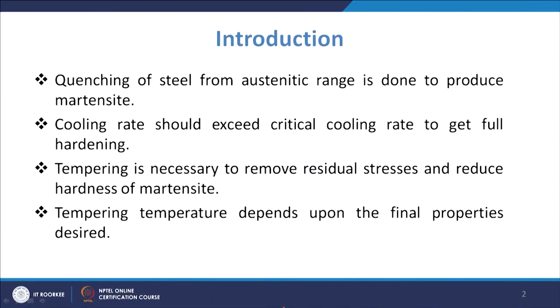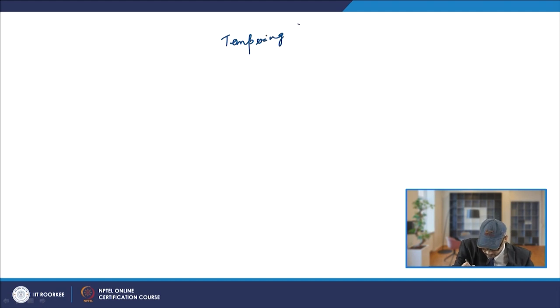Because of the extremely high level of stresses from martensite formation, we need to temper in order to reduce this extreme hardness and induce certain toughness. We use the process known as tempering, which is necessary to remove the residual stresses and reduce the hardness of martensite. In the tempering process, we further heat to a certain temperature range and hold for some time so that residual stresses become lesser and the toughness is increased.